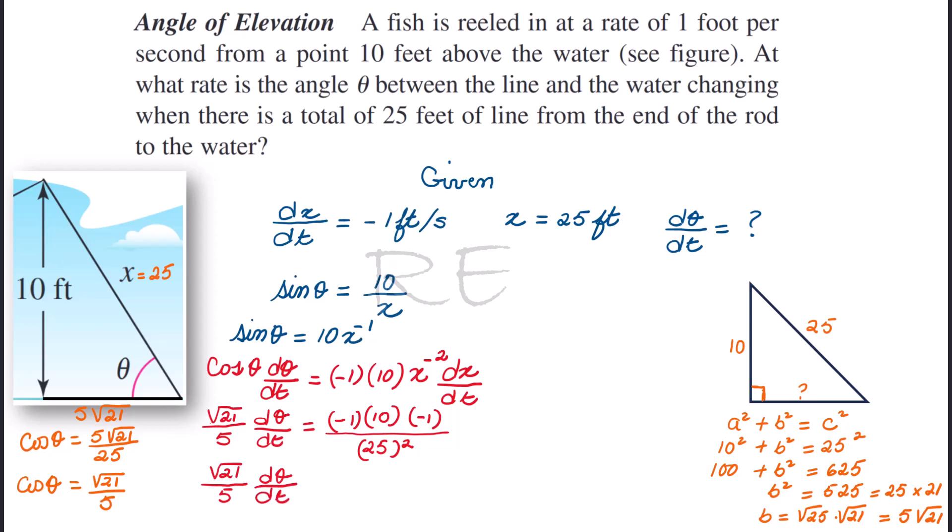Negative 1 times negative 1 is positive 1. Therefore, we end up with 10 over 25 squared, which is 625.